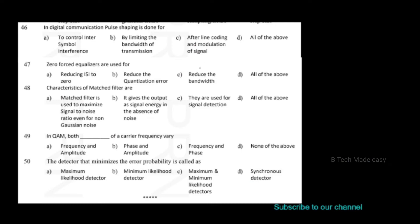In digital communication, pulse shaping is done for: controlling inter-symbol interference by limiting the bandwidth of transmission; after line coding and modulation of the signal; and all of the above. Pulse shaping is done for all of the above.